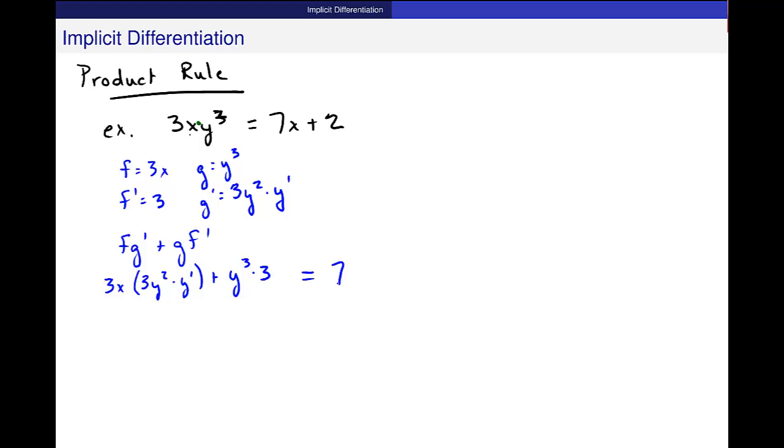Okay, so let's simplify this left side. I get 9xy squared y prime plus 3y cubed equals 7.